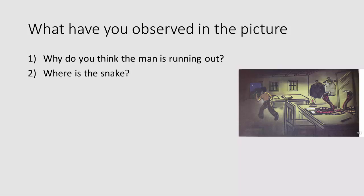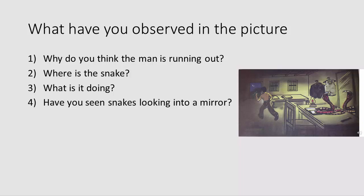Where is the snake? It is quite simple — it is on the table. What is the snake doing? The snake is looking into the mirror and admiring at its own image. Have you seen snakes looking into a mirror? Generally, we cannot find snakes in rooms before a mirror. We won't find this type of scene normally because snakes are usually found in open areas. So you might not have seen snakes looking into a mirror.